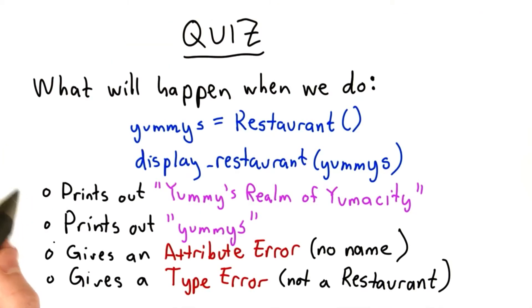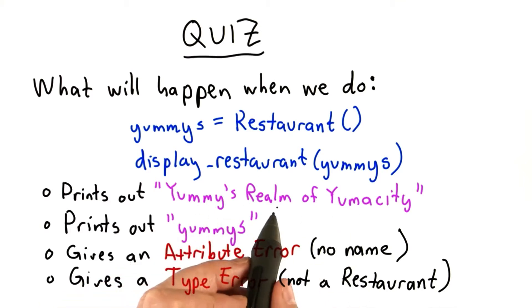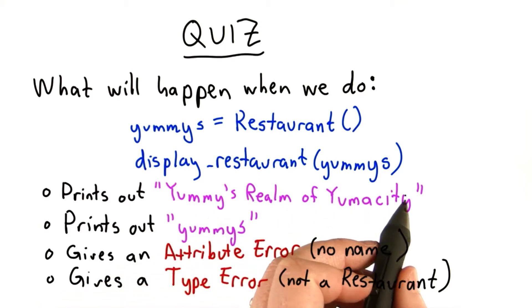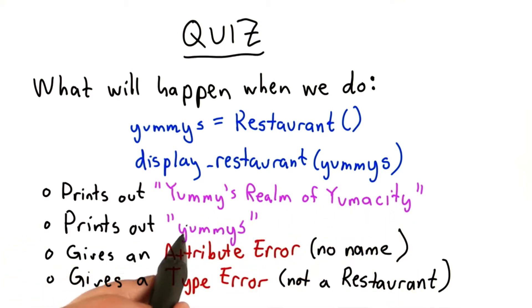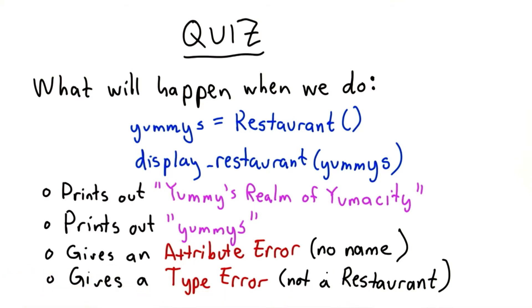The choices are: it prints out yummies realm of yumacity, it prints out yummies, it gives an attribute error because there's no name attribute, or it gives a type error because Yummies is not a restaurant.